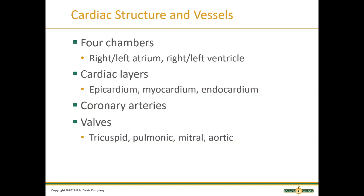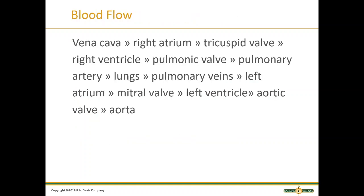This is our blood flow path. From the vena cava, blood enters the right atrium, through the tricuspid valve, to the right ventricle, through the pulmonic valve, to the pulmonary artery, to the lungs, then back through the pulmonary veins to the left atrium, through the mitral valve, to the left ventricle, through the aortic valve, and out the aorta.